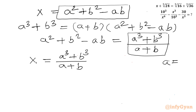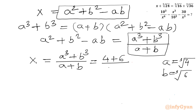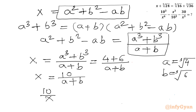Since a = ∛4, a³ = 4. Since b = ∛6, b³ = 6. So x = (4 + 6)/(a + b) = 10/(a + b). Cross-multiplying gives (a + b) = 10/x.